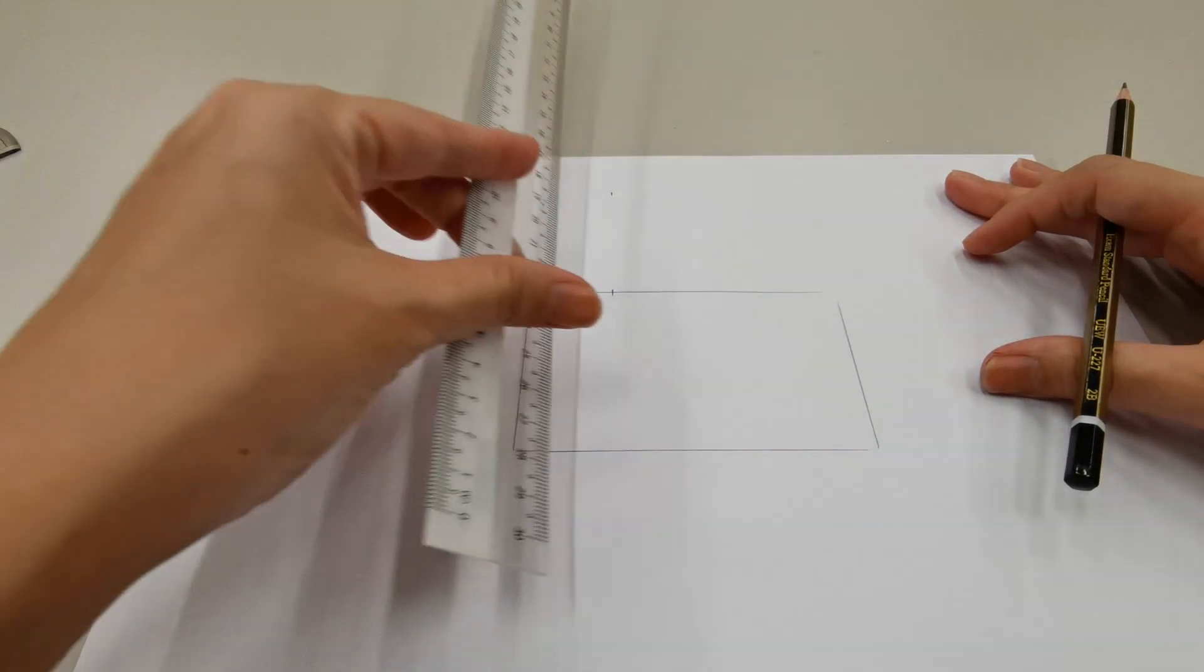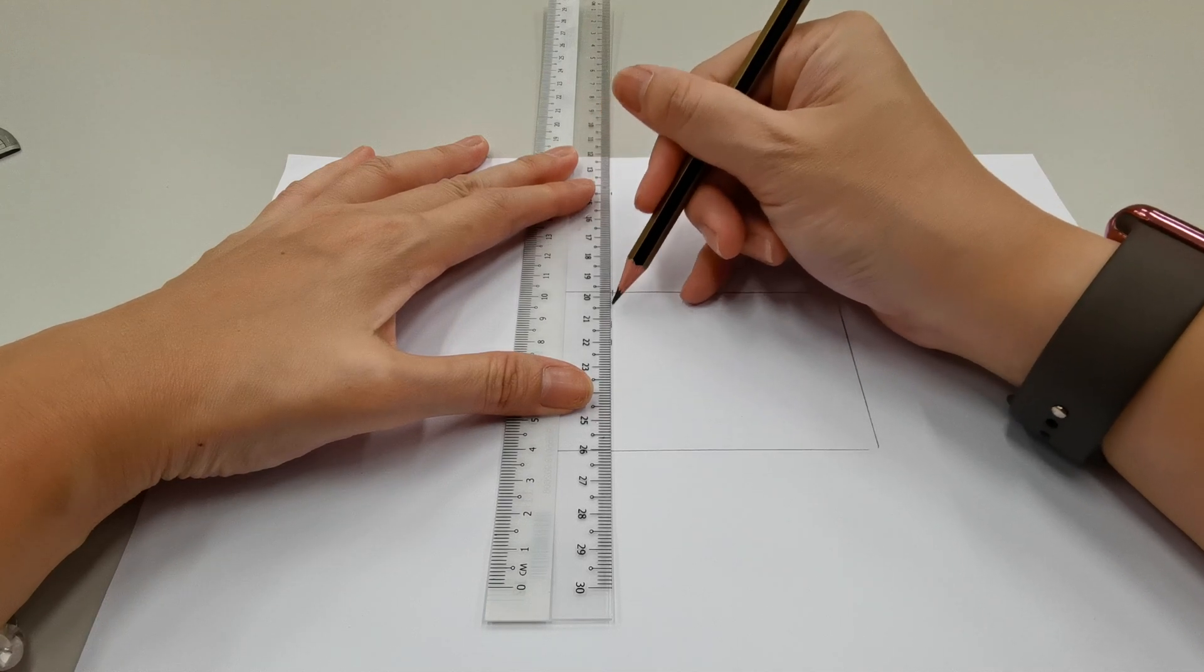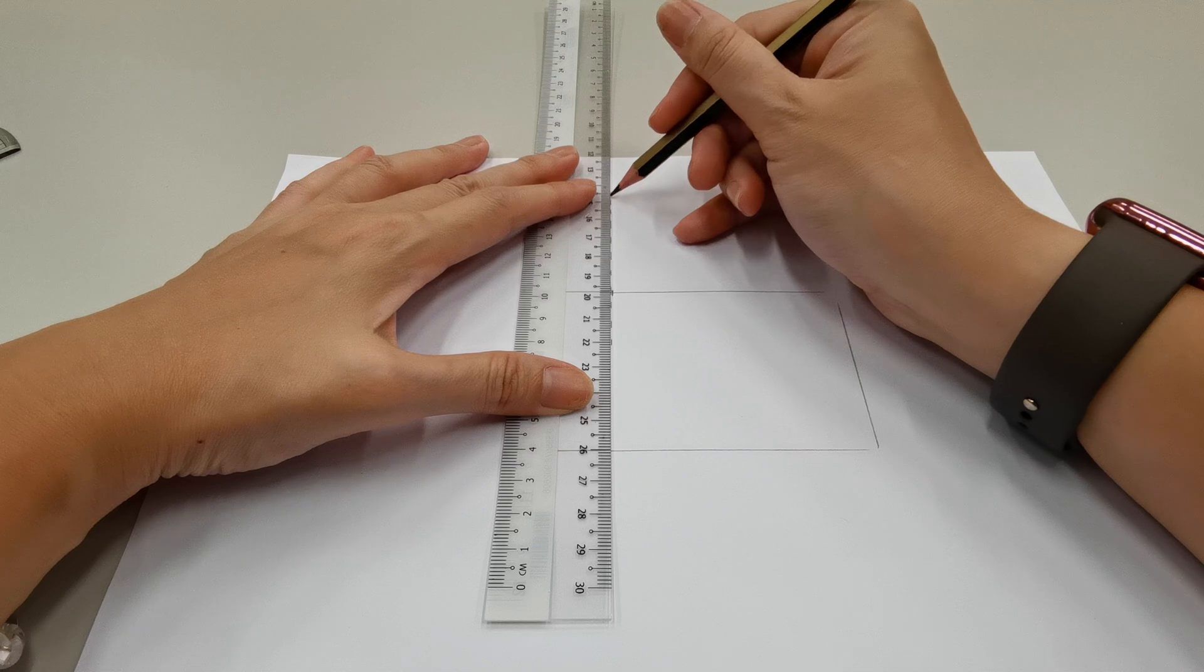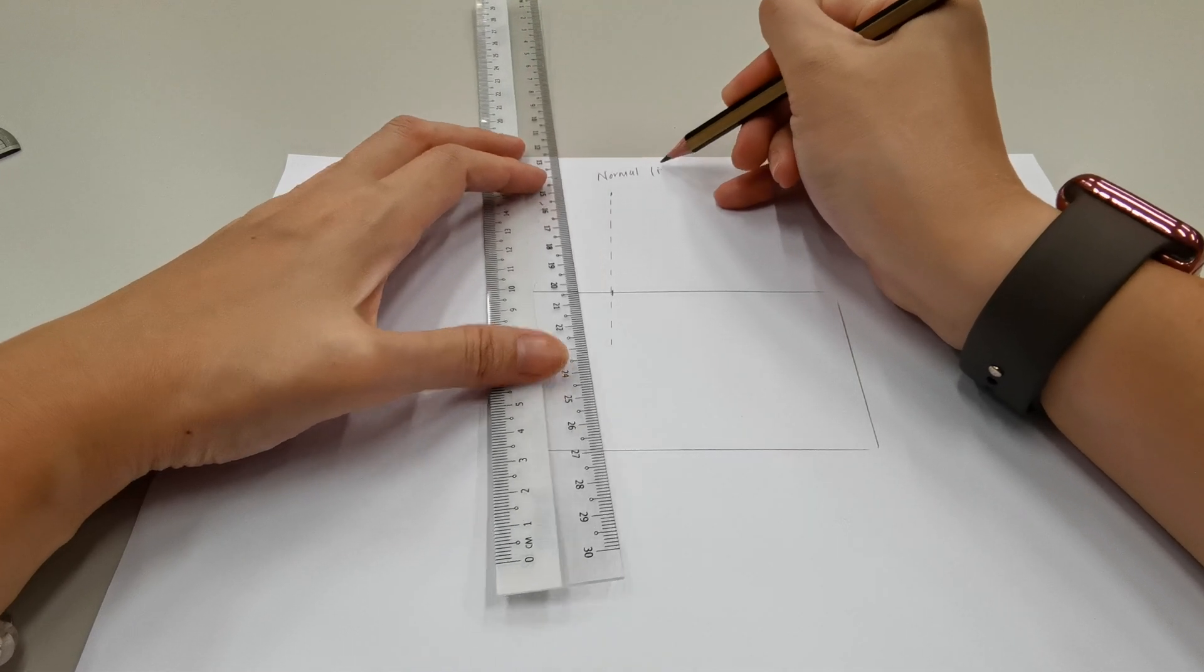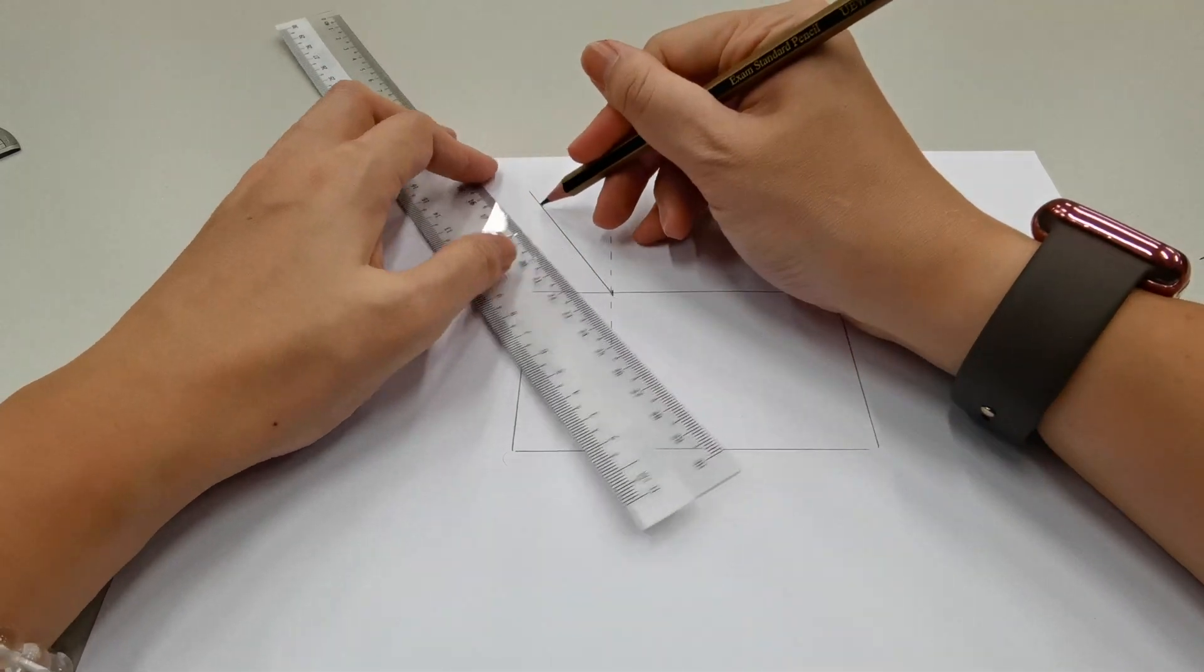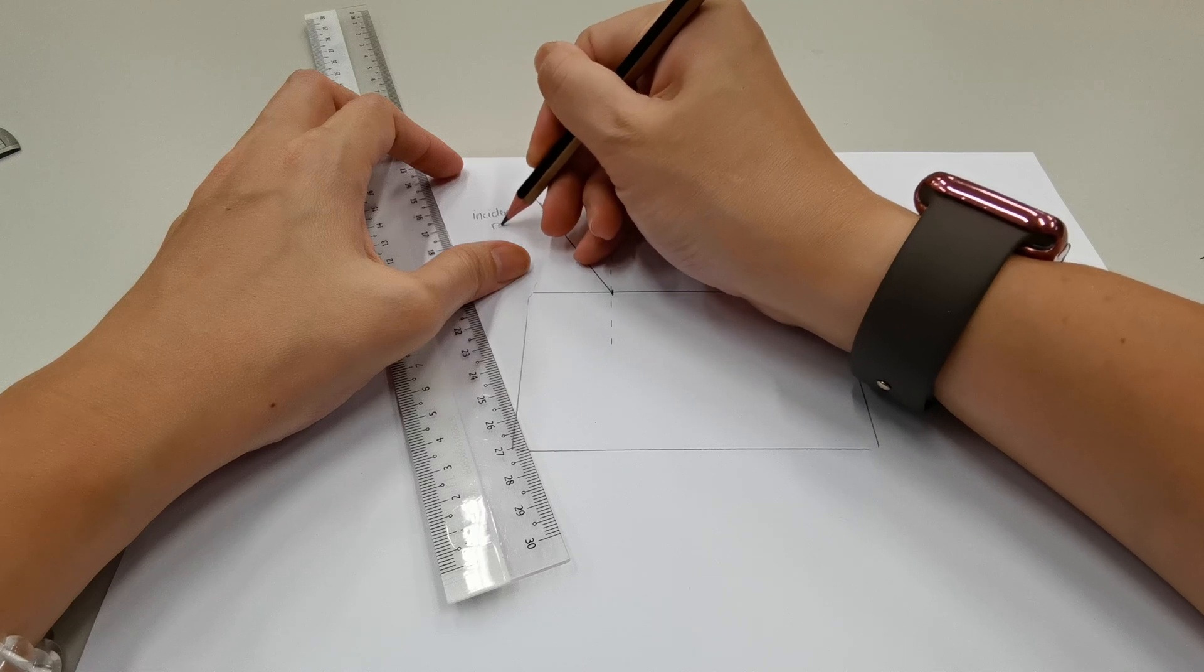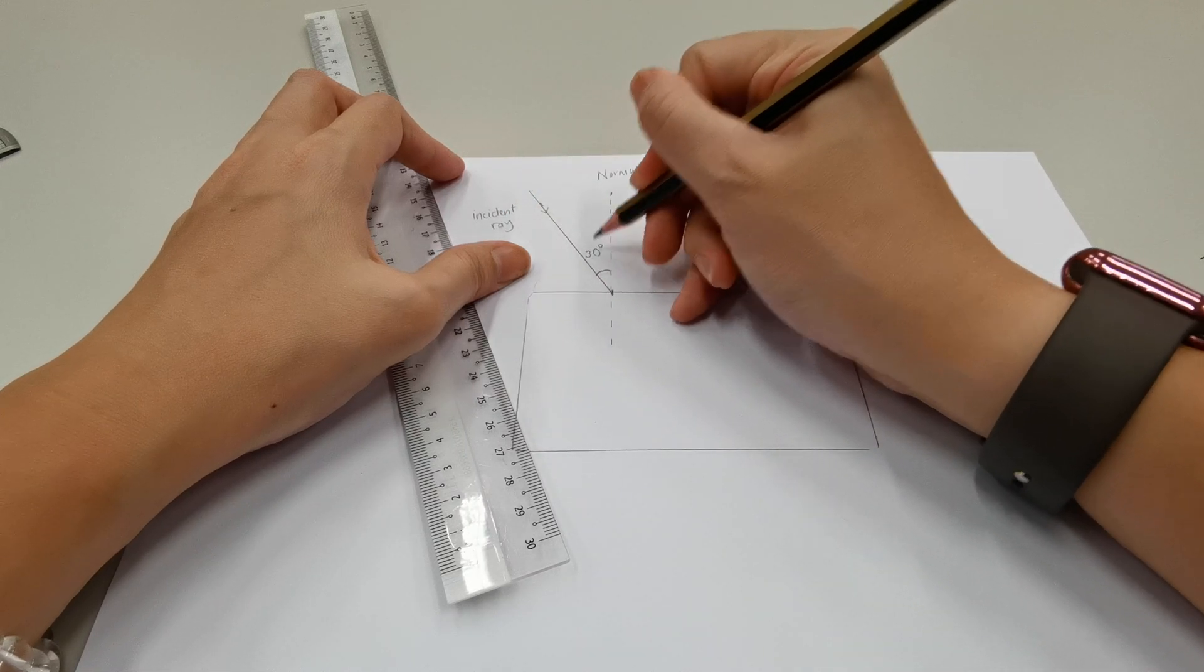Using the ruler, we're going to connect the dots. These two points will make the normal line. Okay, so normal line. And next, we'll connect these two points to make the incident ray. This is the incident angle which I'll label here, 30 degrees.